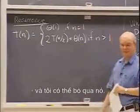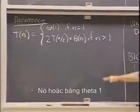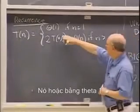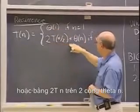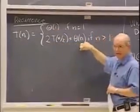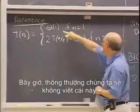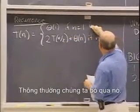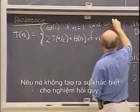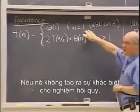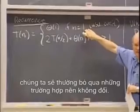I can throw it away. So it is either theta one, or it is 2T(n/2) plus theta n. Typically we won't be writing this — we omit this if it makes no difference to the solution of the recurrence. We will usually omit constant base cases.